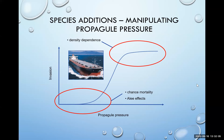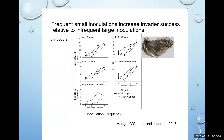We use all approaches — experimental, mensurative, and remote sensing. We've done lots of experimental work looking at what happens when you change the frequency or intensity of arrival of non-indigenous species. An example is where we played with propagule pressure — the inoculation frequency is on the x-axis and the invader success of the Pacific oyster is on the y-axis. As we increased inoculation frequency while keeping the absolute number of invasive species arriving the same and controlling for all sorts of things including timing, we get increased invader success — which is what you predict under most theoretical models.